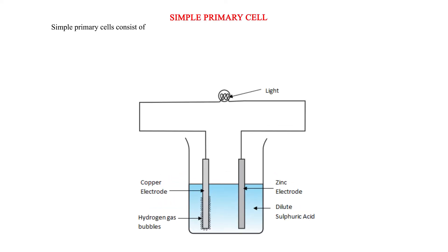Simple primary cell. Simple primary cells consist of zinc and copper plates as electrodes and dilute sulfuric acid as the electrolyte in a container as shown.